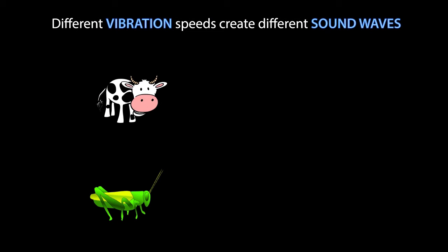One key to this question is that different vibration speeds create different sound waves. For example, when a cow moos, its vocal cords have relatively slow vibrations, which creates a low frequency sound wave.